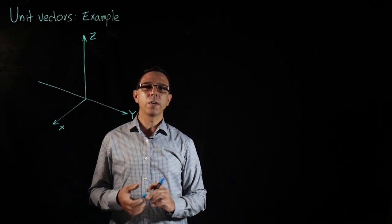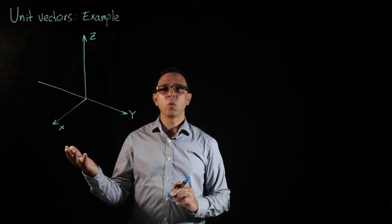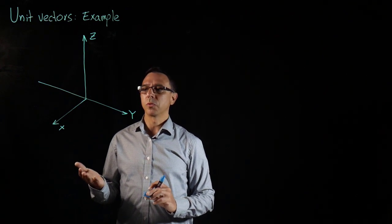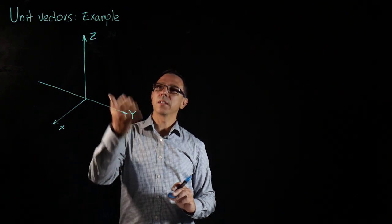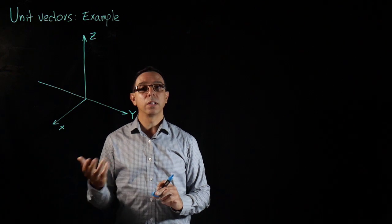Let's look at an example of unit vectors. In this particular example, we're going to deal with a three-dimensional problem. So we have our x, y, and z axis as drawn here in the figure.